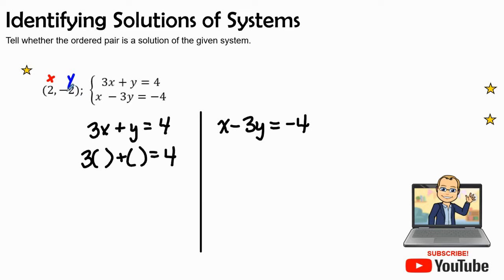For the y value we see a negative 2 so I'm going to plug that in, and for the x value we're going to see a positive 2. So 3 times 2 is 6 plus negative 2 equals 4, and 6 minus 2 is 4, and therefore 4 is equal to 4, so the answer is yes. Yes, the point (2, -2) would be found on the line 3x plus y equals 4.